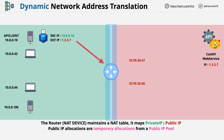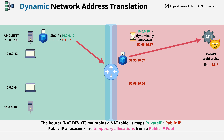And if it doesn't, and one is available, it allocates one dynamically and on a temporary basis. In this case, 52.95.36.67 is allocated on a temporary basis. So the packet's source IP address is translated to this address, and the packets are sent onto their final destination.